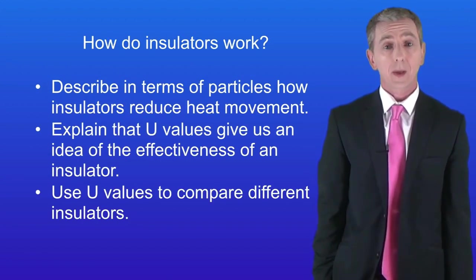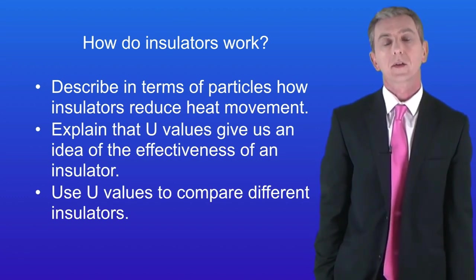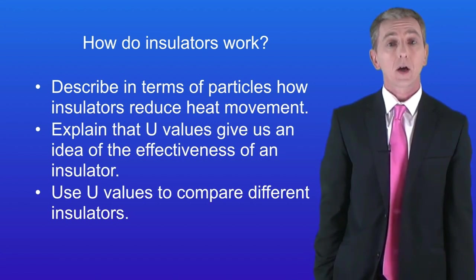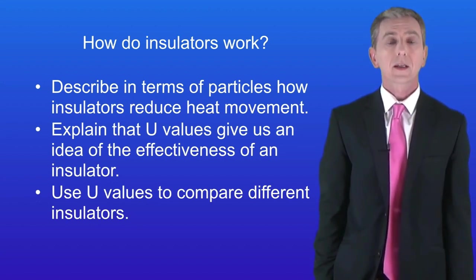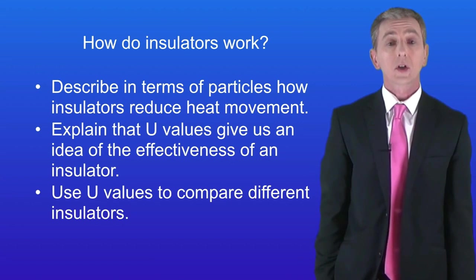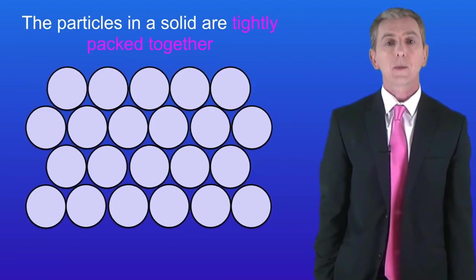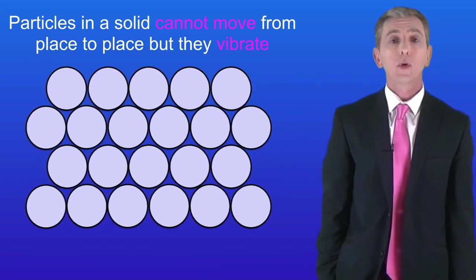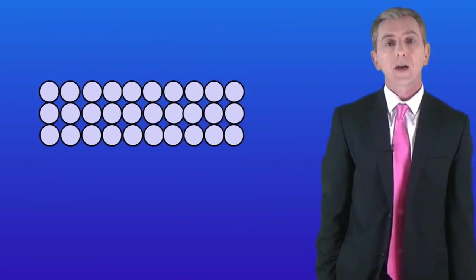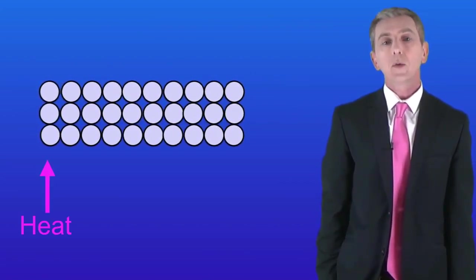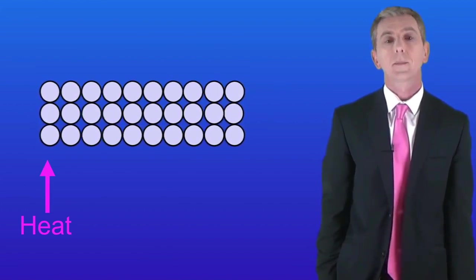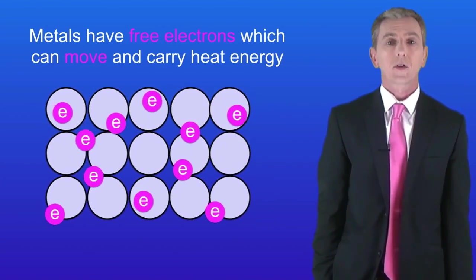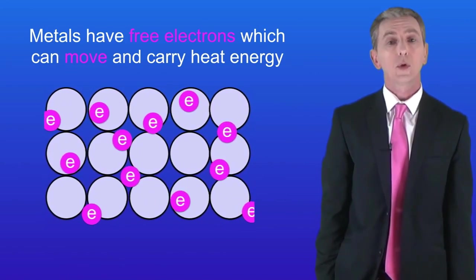At the end of this video you should be able to describe in terms of particles how insulators reduce heat movement, explain that U values give us an idea of the effectiveness of an insulator, and use U values to compare different insulators. We've looked at how heat can move by conduction. Solids are good conductors of heat but liquids and gases are not, due to the arrangement of particles. The particles in a solid are tightly packed together and cannot move from place to place but can vibrate. When we heat one end, particles vibrate with greater energy, colliding with nearby particles spreading the energy and carrying the heat. Metals are especially good conductors because they have free electrons which can move and carry the heat energy.